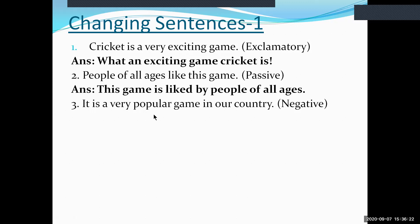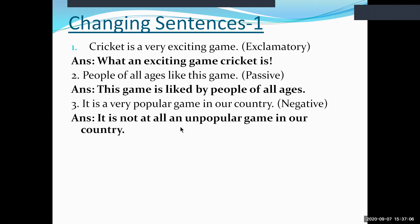The third sentence: 'It is a very popular game in our country.' We have to make this sentence negative. The adverb 'very' is replaced by 'at all' in a negative sentence, and 'popular' is replaced by its antonym 'unpopular.' Also convert article 'a' to 'an' before 'unpopular,' which begins with the vowel 'u.' The negative form is: 'It is not at all an unpopular game in our country.'